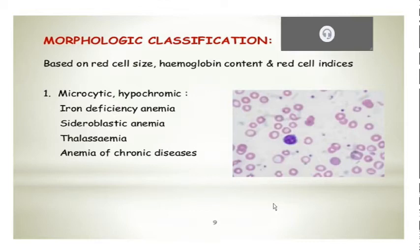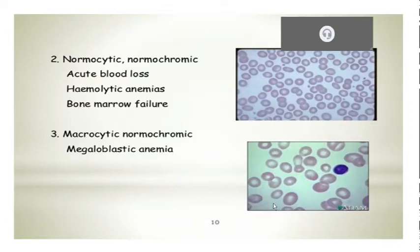Then you have normocytic normochromic anemia, that can be seen in chronic diseases, acute blood loss, also in hemolytic anemia and bone marrow failure. In chronic blood loss or chronic diseases, the first manifestation is usually normocytic or normochromic anemia, or even in the early phase of iron deficiency anemia you can have normocytic normochromic anemia, and even this chronic disease can also have microcytic hypochromic anemia.